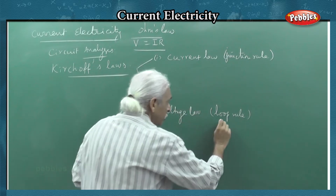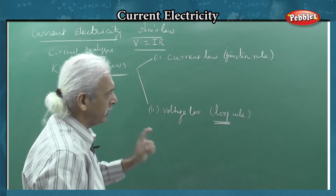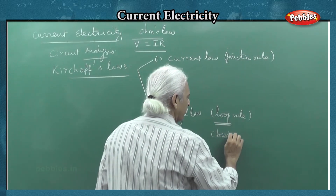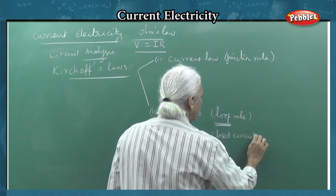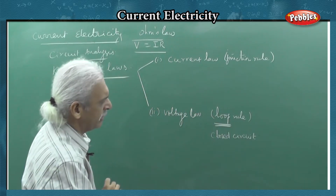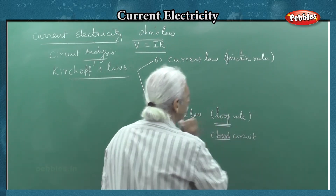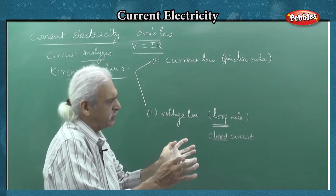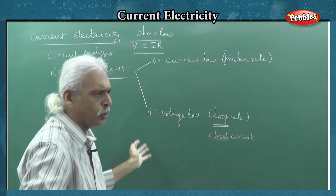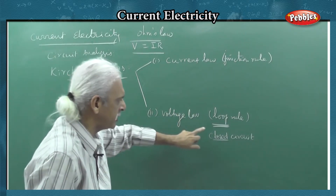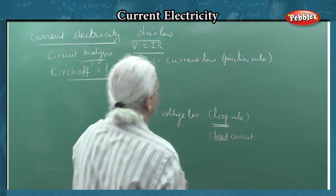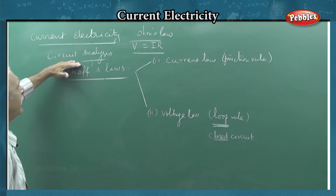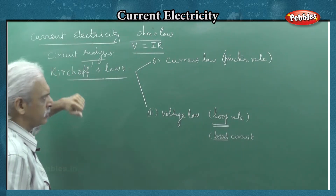To apply this — basically, if you have to apply the voltage law, I will introduce a loop. This is important. If you have to apply the loop, you have to apply it to a closed circuit. In a closed circuit, to apply the second law — the voltage law — you apply it to the loop, which is a closed circuit. Kirchhoff's law is based on Ohm's law, then applied to analysis of circuits.